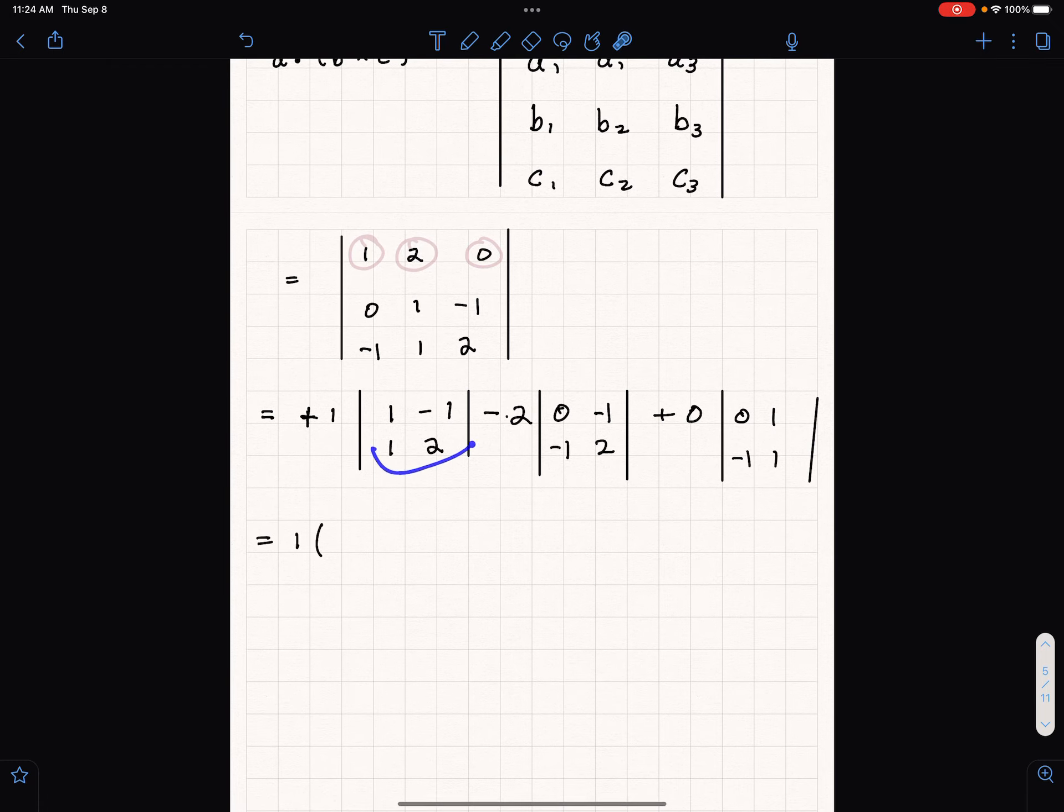One times this first two by two determinant. How do we work that out? We multiply across the diagonal, one times two, and then we subtract multiplying by that other diagonal going the other way. Then negative one times negative one.